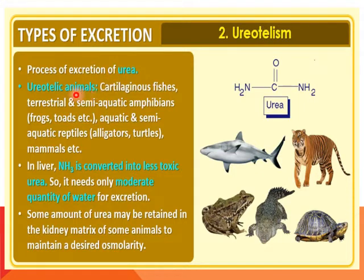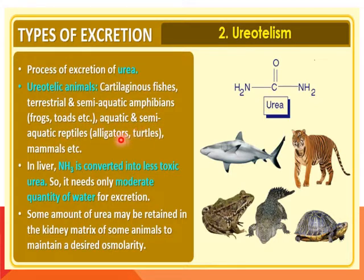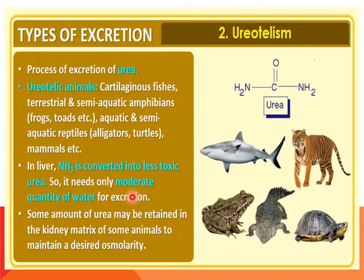Next is urotelism, in which animals excrete urea as a waste product and are known as urotelic animals. Examples include cartilaginous fishes, terrestrial and semi-aquatic amphibians like frogs and toads, aquatic and semi-aquatic reptiles like alligators and turtles, and mammals. In the liver, ammonia is converted into the less toxic nitrogenous waste product urea, and it needs only a moderate quantity of water for excretion.